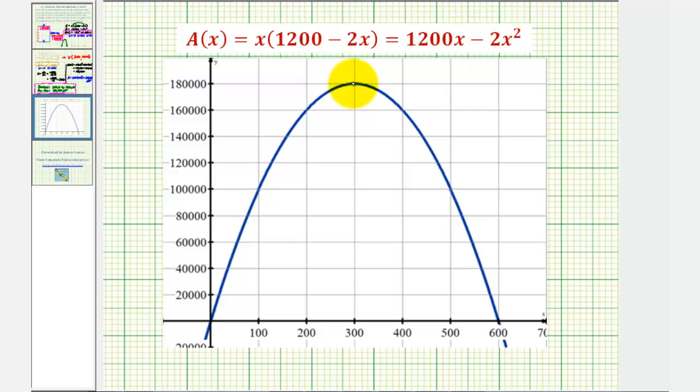But notice how the vertex here does have an x-coordinate of 300, which represents the width that would maximize the area. And then the y-coordinate, 180,000, represents the maximum area. So this does verify our results.